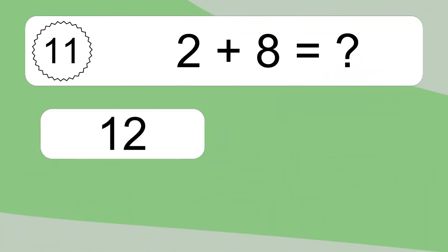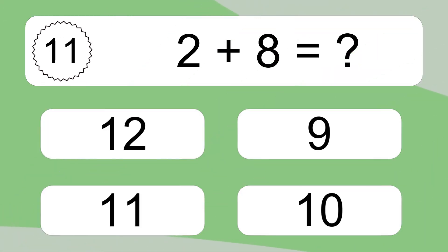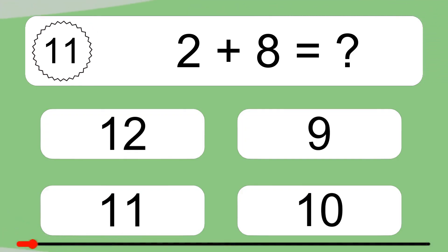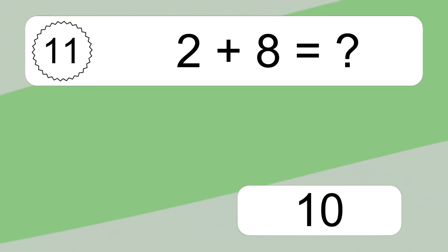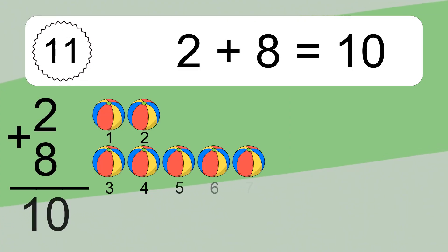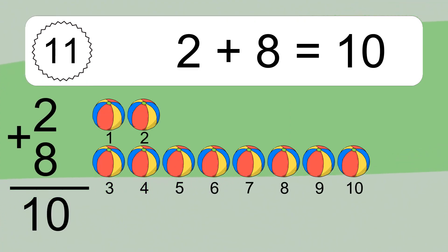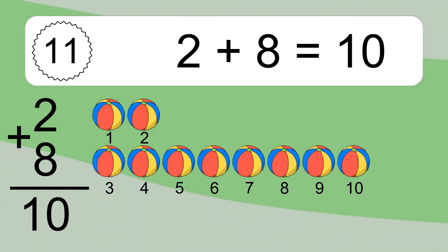Two plus eight equals what? Two plus eight equals ten. Let's count it: one, two, three, four, five, six, seven, eight, nine, ten.